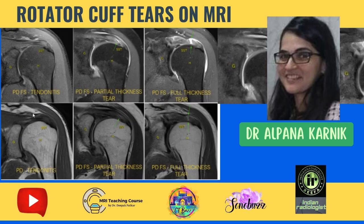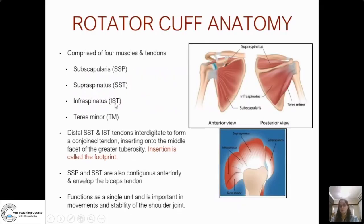Let's start with the rotator cuff pathologies. The important thing about the rotator cuff insertion is that all four tendons — mainly the supraspinatus and infraspinatus — interdigitate distally and form a conjoined tendon which inserts onto the middle facet of the greater tuberosity. This insertion is called the footprint. Anteriorly, some fibers of the supraspinatus will interdigitate with the subscapularis.